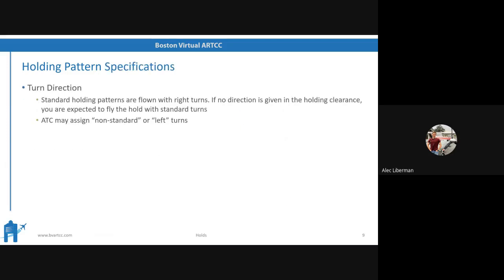Holding pattern specifications. Turn direction: standard turns are to the right. So unless you're otherwise told by air traffic control, you are going to be flying a hold with right turns. Air traffic control may assign left turns by saying 'left turns' as part of your holding clearance, but normally it's to the right.